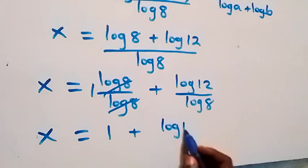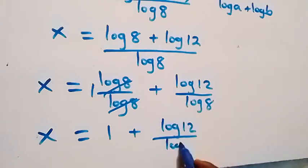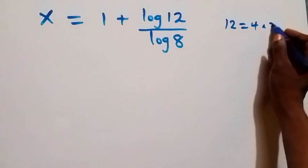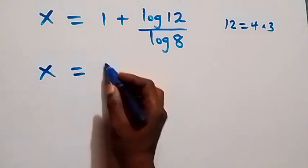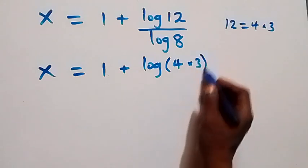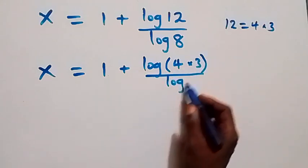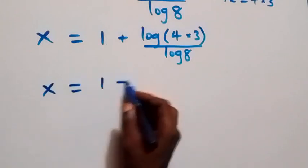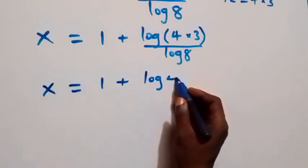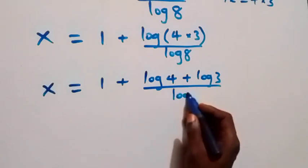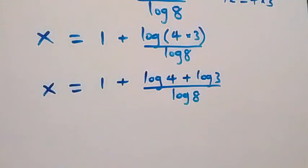Now, 12 can be written as 4 times 3, so x = 1 + log(4×3)/log(8). Applying the product rule again: x = 1 + (log(4) + log(3)) / log(8).